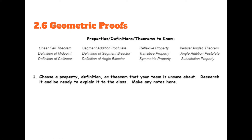The segment addition postulate says we can add two segments to get a bigger segment. The definition of segment bisector says if something is a segment bisector, then it cuts the segment into two equal pieces. Definition of angle bisector says if something is an angle bisector, then it cuts an angle into two equal pieces. Reflexive, transitive, and symmetric we just covered in 2.5. The vertical angles theorem says if two things are vertical angles, then those two angles are congruent. The angle addition postulate says you can add two small angles to make a bigger angle. And substitution we also covered in 2.5, so make sure you're familiar with all of those.